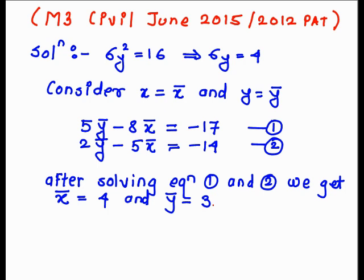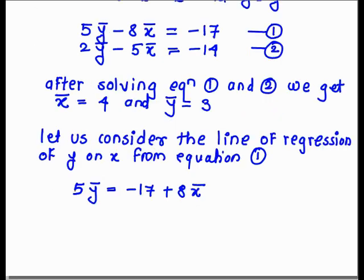Now we start with the line of regression of y on x. For line of regression y on x, we write y bar in terms of x bar. So we get 5y bar equals minus 17 plus 8x bar. Here we require the coefficient of y bar as 1, so we divide both sides by 5.